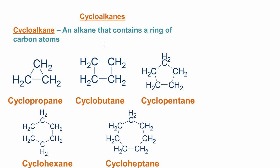Cycloalkanes are alkanes that contain a ring of carbon atoms. The carbon atoms are bonded to one another and they form a ring.